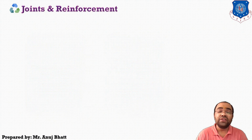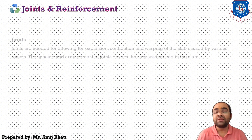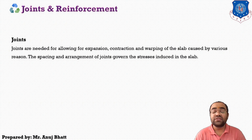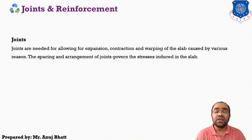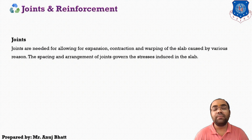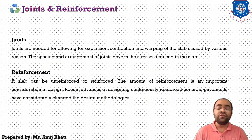The next factors are joints and reinforcement additionally provided in rigid pavement. Joints are needed to allow for expansion, contraction, and warping of the slab. If such joints are not provided, there is a possibility of pavement failure due to the rigidity of the concrete. The spacing and arrangement of joints govern the stresses induced in the slab, making joints a very crucial element in pavement design. The slab can be unreinforced or reinforced.